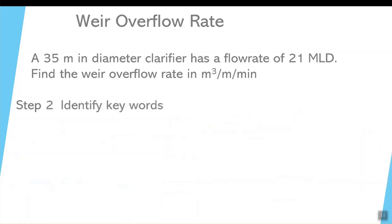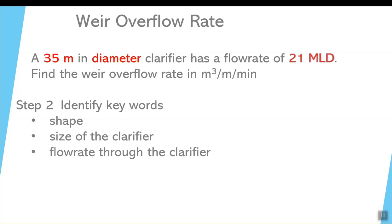What are the keywords in the information provided? First of all, it's a round weir, as is implied by the term diameter. The size of the clarifier is about 35 meters. And notice how it has a flow rate of approximately 21 megaliters per day.